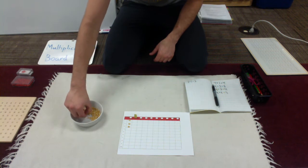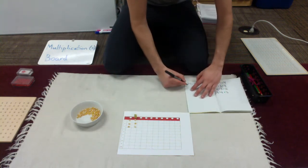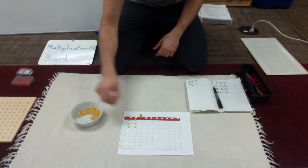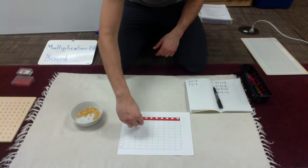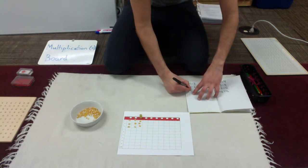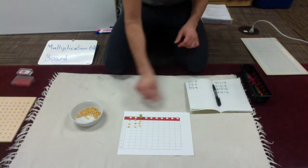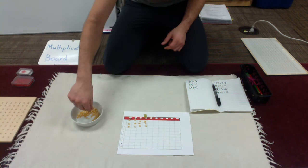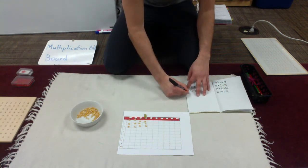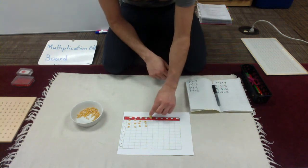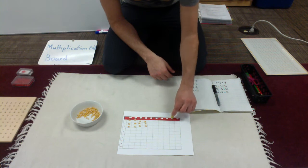Three times two. Three, four, five, six. Three times two is six. See it, say it, write it. Three times three. Three, six, seven, eight, nine. Three times three is nine. Three times four. Three, six, nine, ten, eleven, twelve. And I would go on and continue with three times five, three times six, three times seven, three times eight, three times nine, and three times ten.